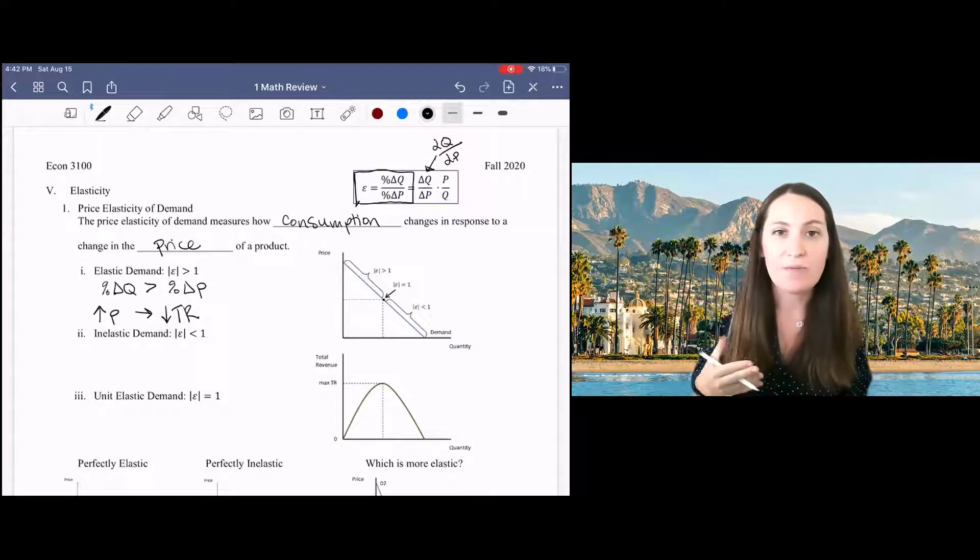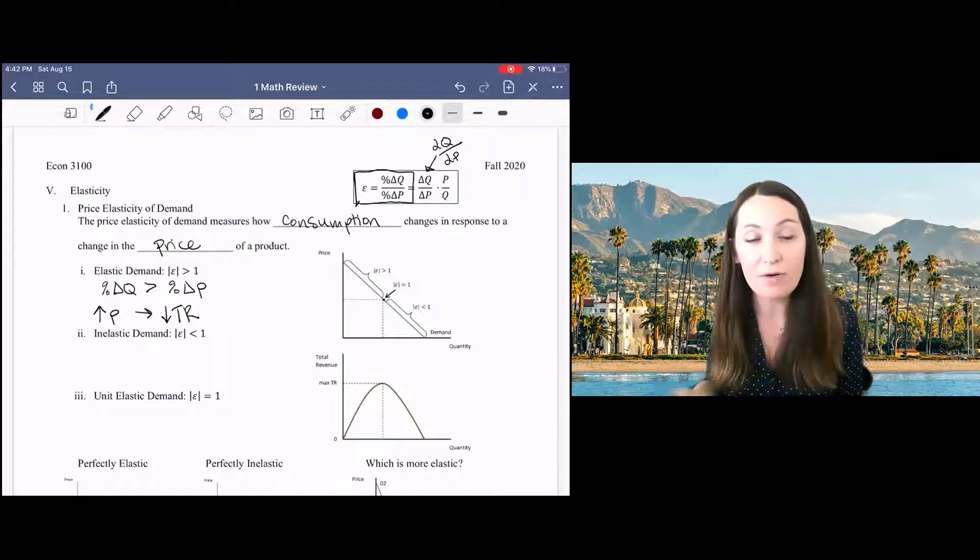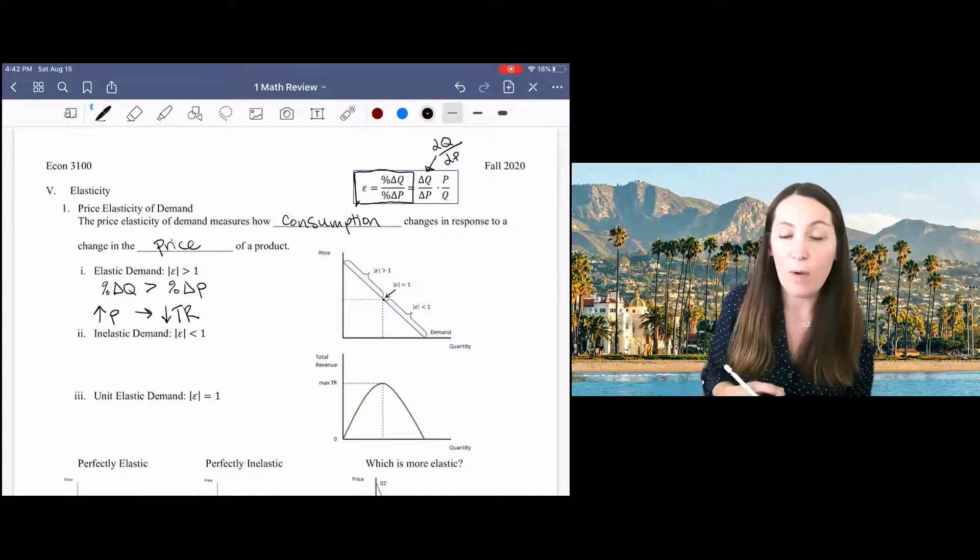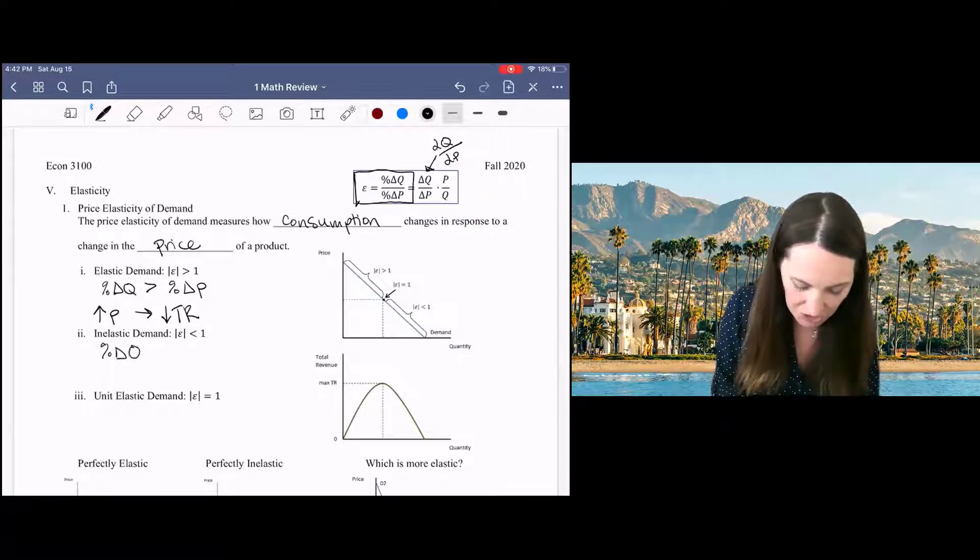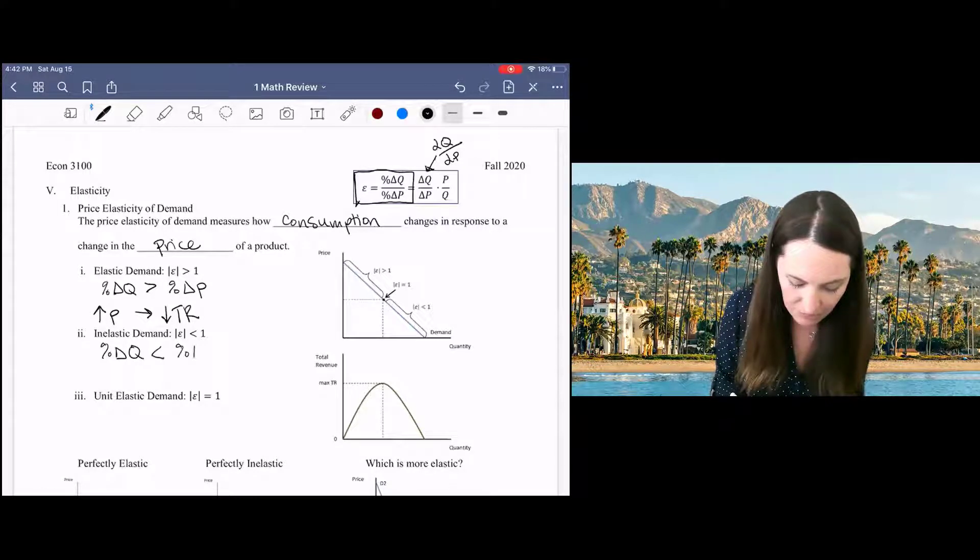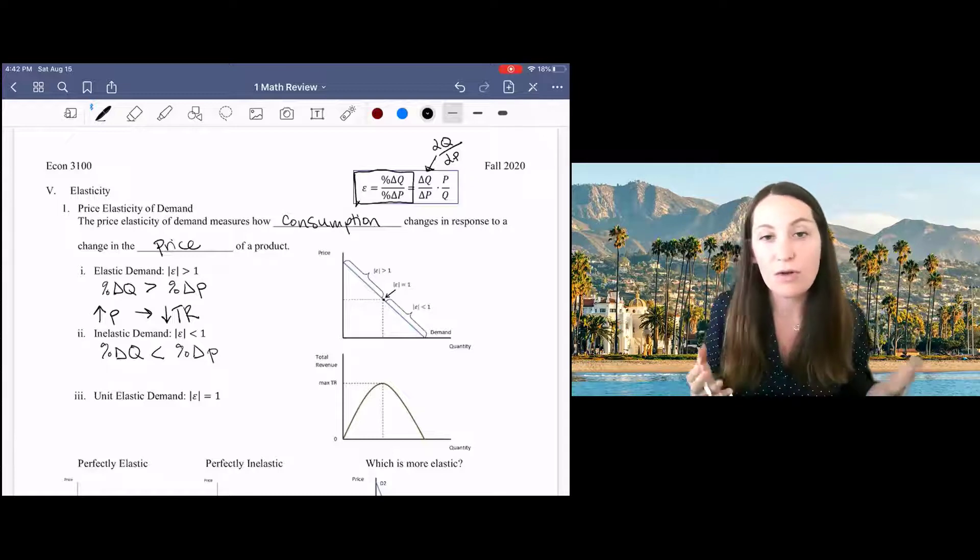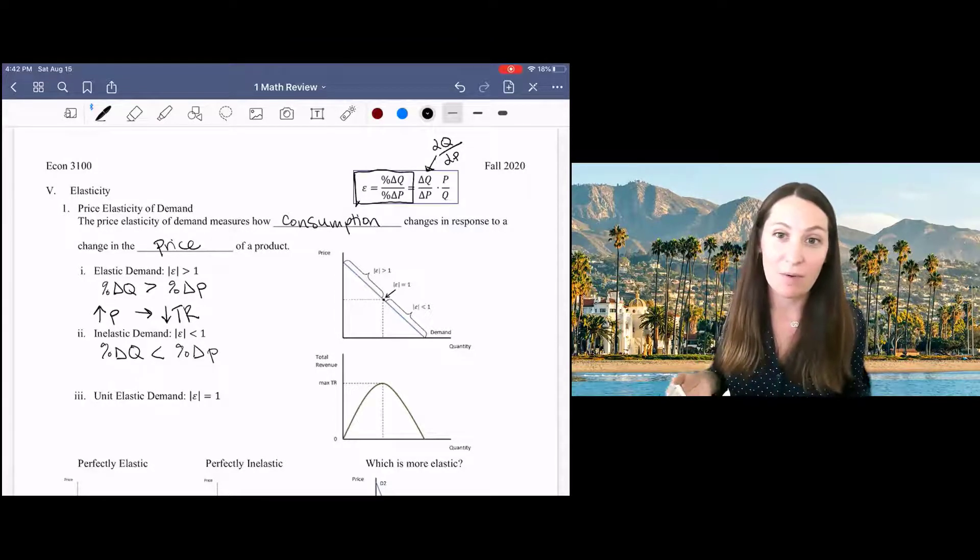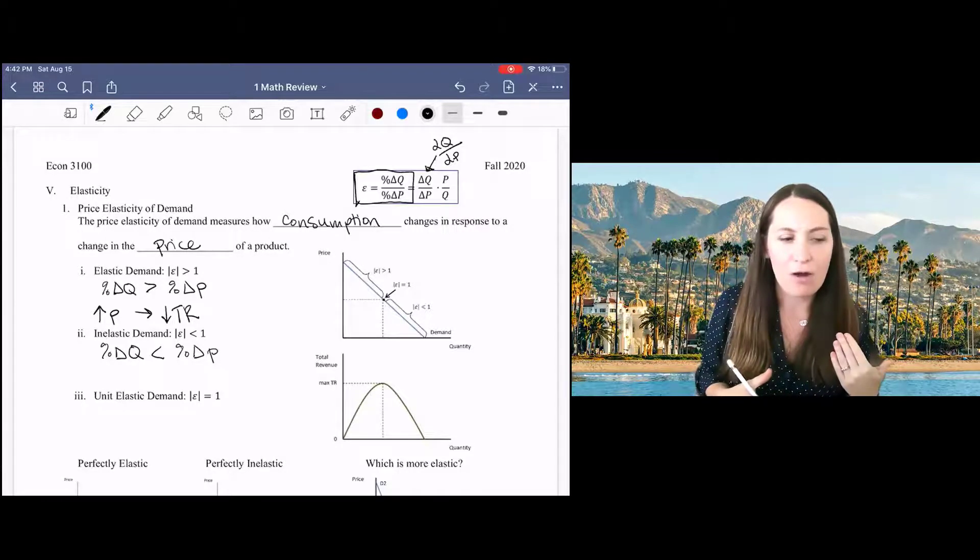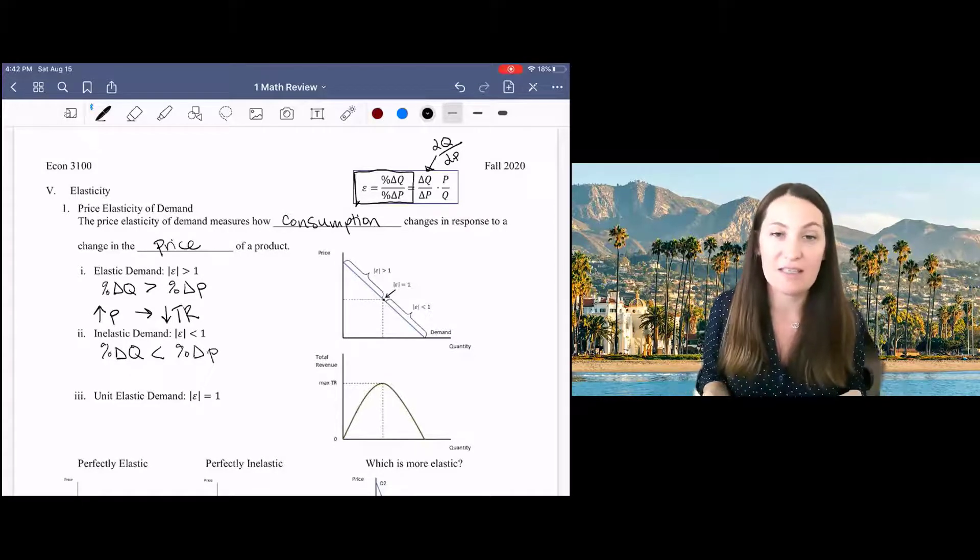The opposite is when we have inelastic demand, meaning that consumers are not very flexible and that's how we refer to demand when this ratio is less than one. In other words, when the percent change in quantity is less than, smaller than that percent change in price. It is worth noting that the price elasticity of demand is actually always going to be negative because when price goes up, quantity goes down and vice versa. So when I'm talking about the size of these changes, we really mean in magnitude and we don't care about the sign.